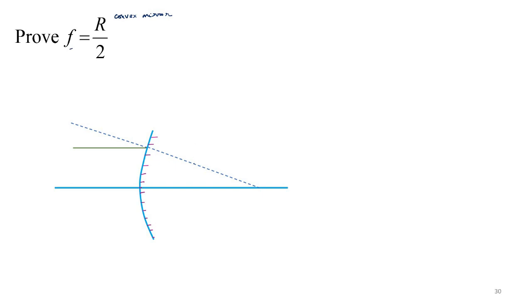And we have drawn a normal. So this is normal. This is incident ray. After reflection, goes like this.